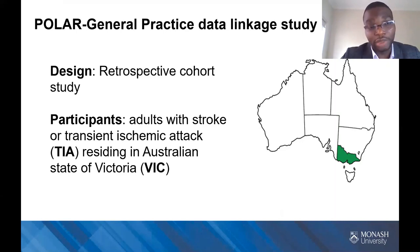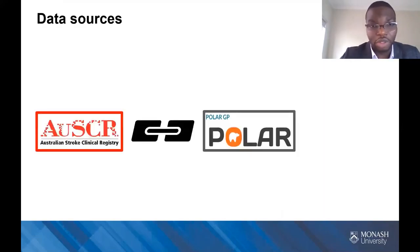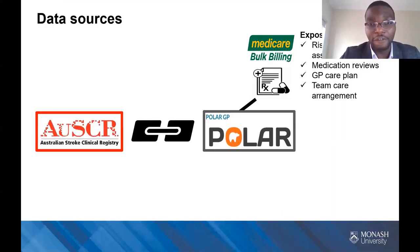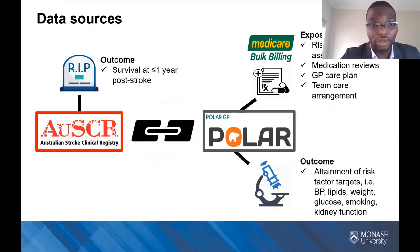We plan to undertake a retrospective cohort study of adult survivors of stroke or TIA residing in the Australian state of Victoria. For the first time in Australia, we'll be undertaking a person-level linkage of data from the National Stroke Registry, that is the OSCA, with the Polar GP data set. The main exposure variable will be adherence to four guideline-recommended practices for long-term stroke management: assessment of risk factors, reviews of medication, use of care plan by the GP, and team care arrangement by the GP. Our outcomes will be survival at up to one year post-stroke and attainment of risk factor targets — specifically blood pressure, lipids, body weight, glucose, smoking, and kidney function. Data on outcomes will be obtained from both the OSCA and the Polar data sets.